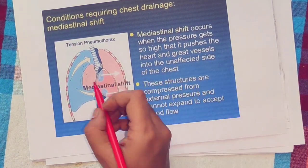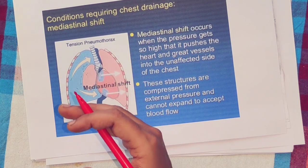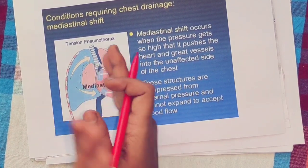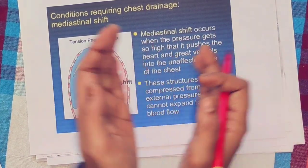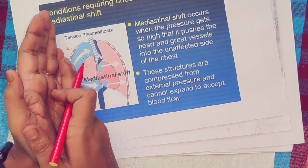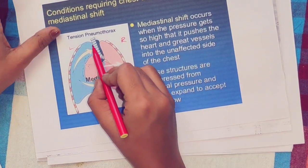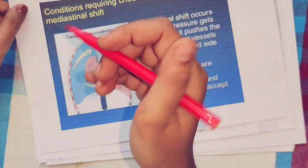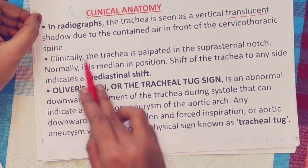In mediastinal shift, the mediastinum moves to the opposite side. For example, in a left-sided pneumothorax, the trachea will deviate away from the side of the pneumothorax.